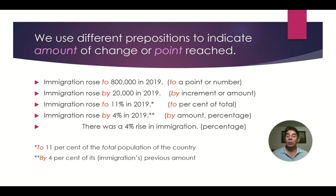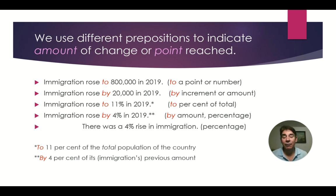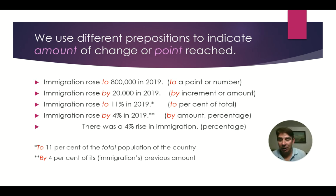Let's look at some examples. Immigration rose to 800,000 in 2019 — that's to a point or number. Immigration rose by 20,000 in 2019 — by an increment or amount. Immigration rose to 11% in 2019 — to a percent or total. Immigration rose by 4% in 2019 — by an amount or percentage. We can also say there was a 4% rise in immigration. To 11% refers to the total population of the country; by 4% refers to immigration's previous amount.